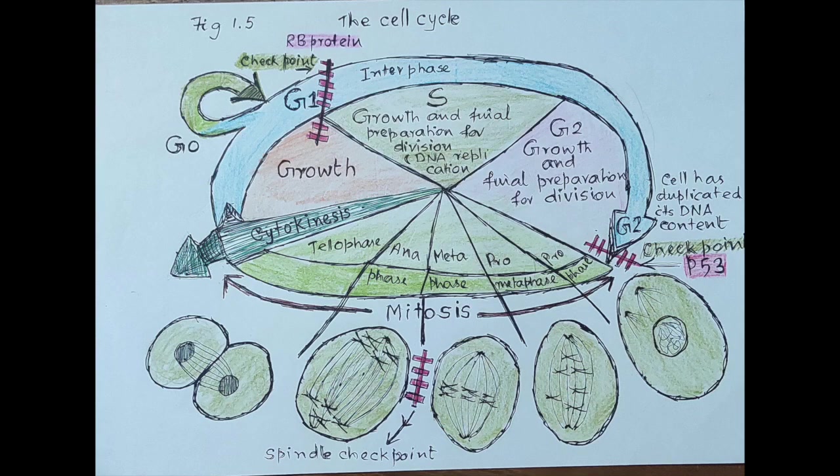Occasionally, cells divide into two daughter cells, for which preparation is required. This preparation phase is G2. After this stage, the cell enters mitosis consisting of prophase, prometaphase, metaphase, anaphase, and telophase, and then returns to the quiescent phase. The cell cycle is thus repeated. See figure 1-5 for the cell cycle.